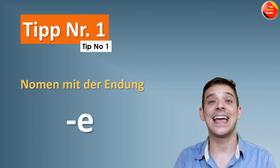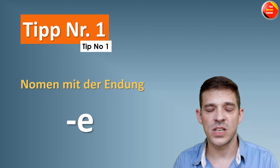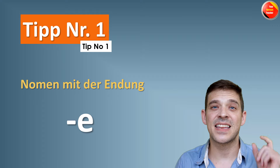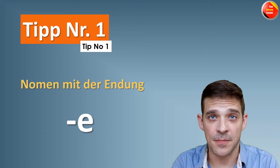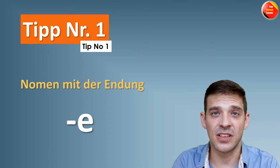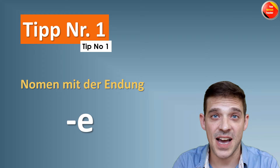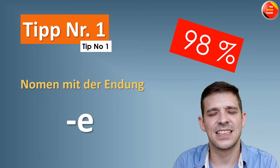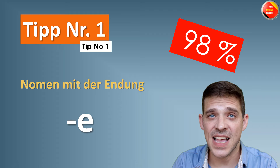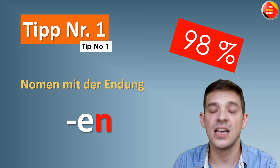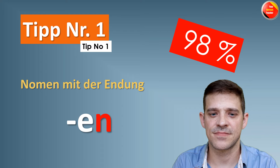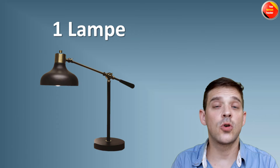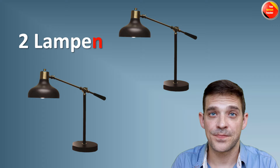Nomen mit der Endung E — nouns ending with E. Almost 50% of all nouns are feminine and a lot of feminine nouns end with E. There are also masculine and neutral nouns ending with E. In almost 98% of cases, you just add N. Zum Beispiel: eine Tasche → zwei Taschen. Oder eine Lampe → zwei Lampen.